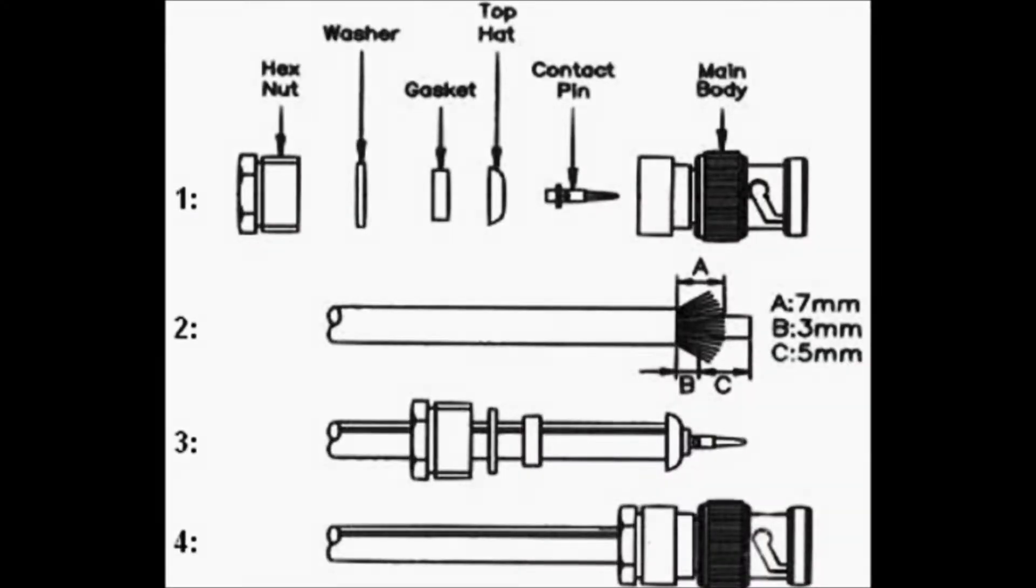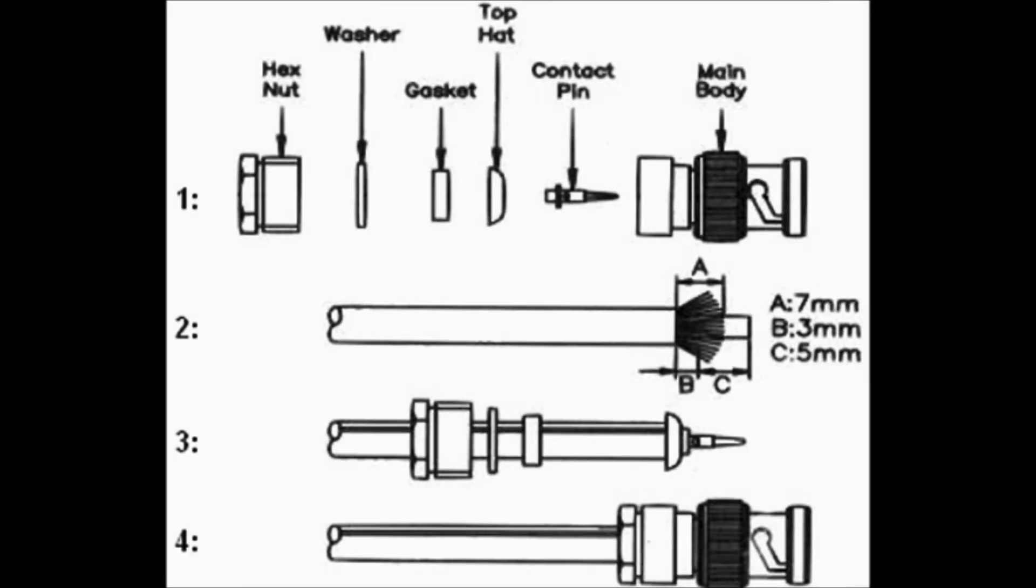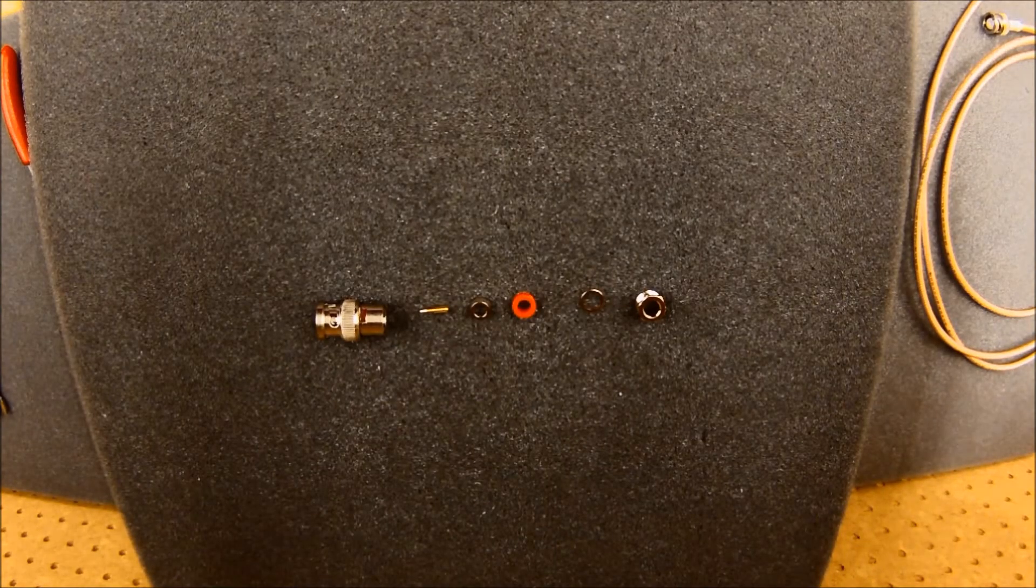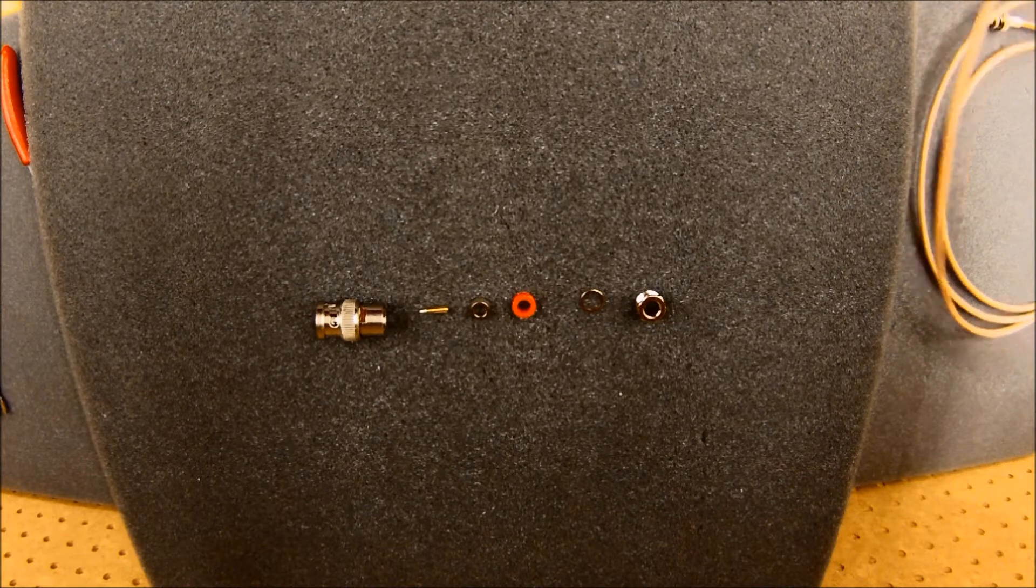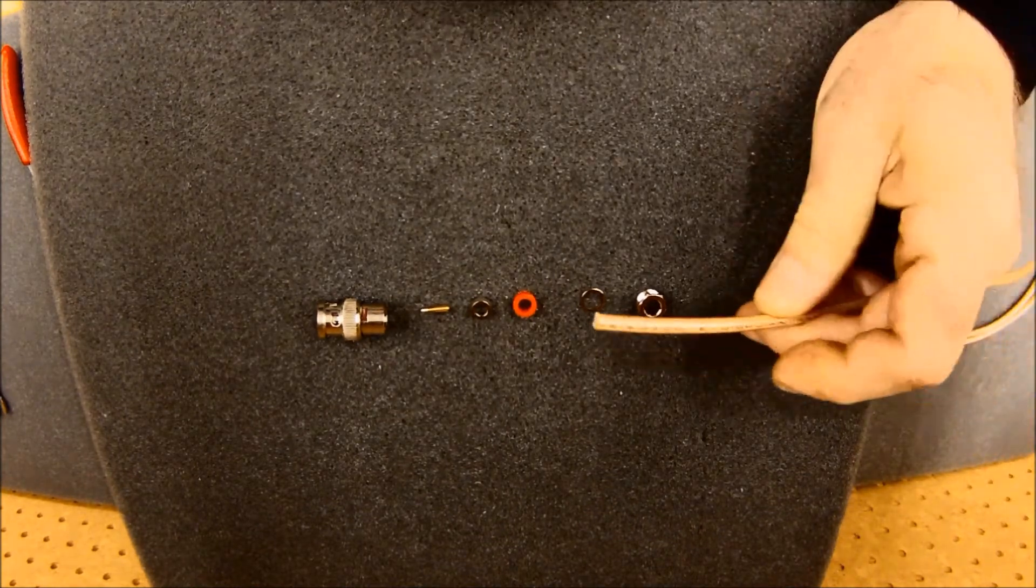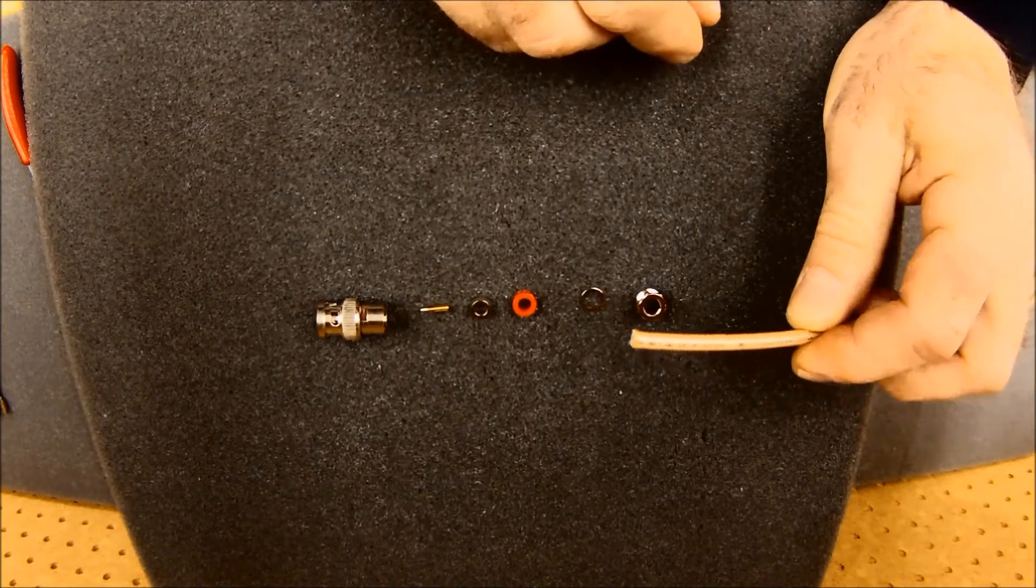First let me offer my apologies and my gratitude to whoever I've stolen this graphic from. But this shows an exploded view of a solder style BNC. Now keep in mind that the strip lengths that are shown here may or may not work for your actual connector. Now here are my actual parts laid out here in order. And as I put these on the coax, I want to make sure I get them on in the right order.